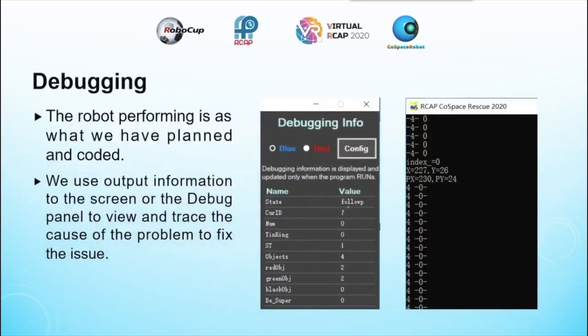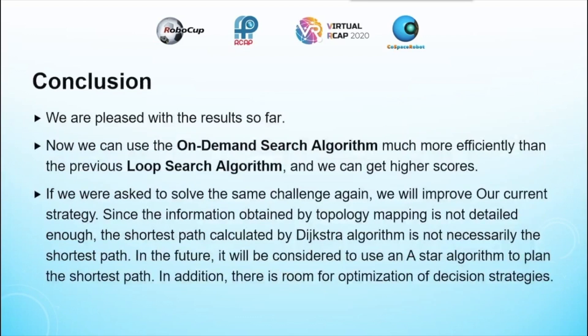The robot's performance reflects what we have paid and coded. We use output information to the screen or the debug panel to read and check the cost of the program and fix issues. This approach is much more efficient than a brute-force loop-set algorithm and allows us to achieve a higher score.